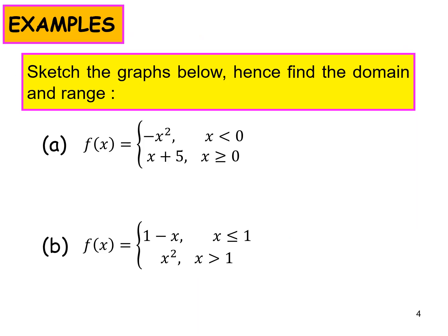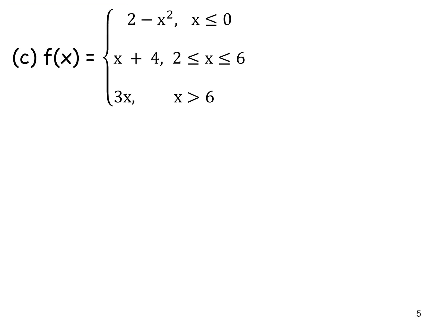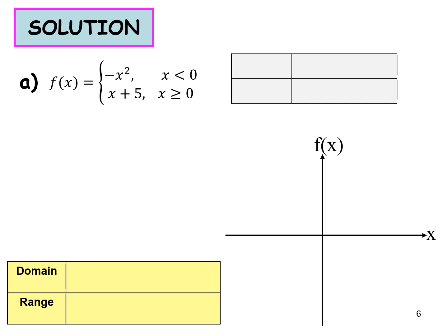Now for the examples: sketch the graph and state the domain and range. We have three examples, a, b, and c. Starting with example a: f(x) is a piecewise function where the first part is negative x squared for x less than 0. Substituting x equals 0 gives y equals 0, which is an open circle.